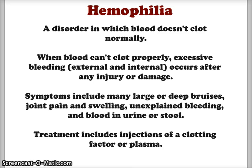When the blood can't clot properly you have excessive bleeding, which could be external or internal and causes greater injury or damage to the system. Symptoms include large or deep bruising, joint pain and swelling, and unexplained bleeding like nosebleeds and blood in urine or stool.